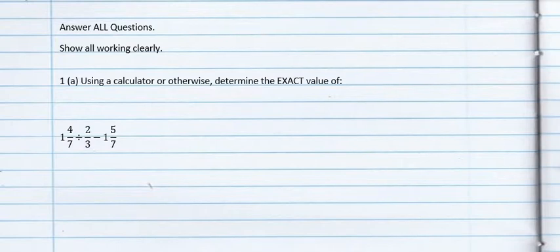Now before we divide, we want to ensure that all mixed numbers are converted to improper fractions. 1 and 4 over 7 as an improper fraction is 11 over 7. How we got that?